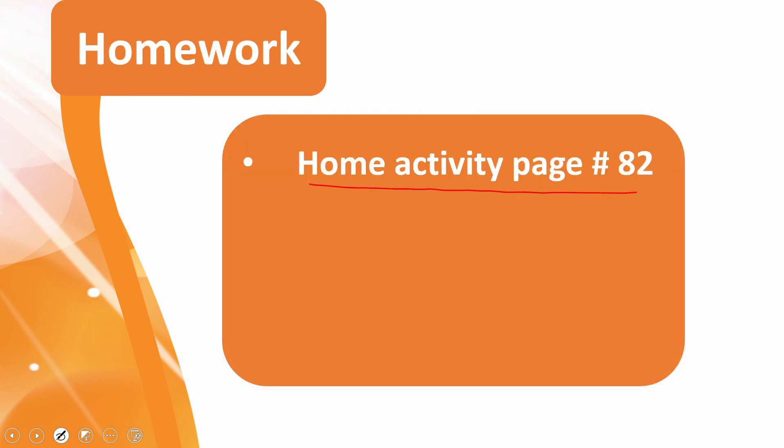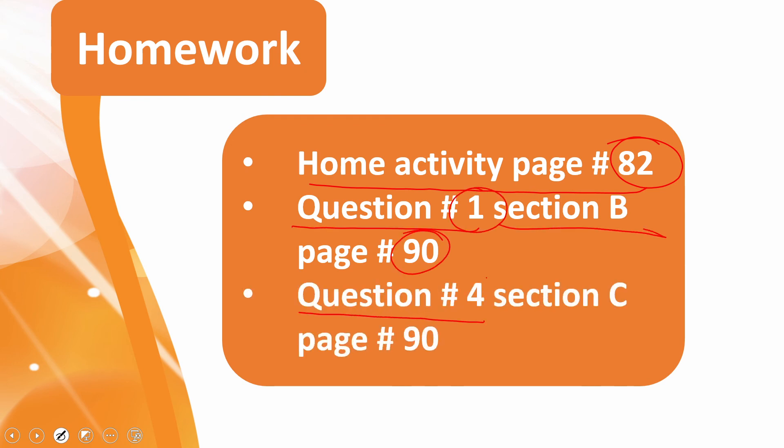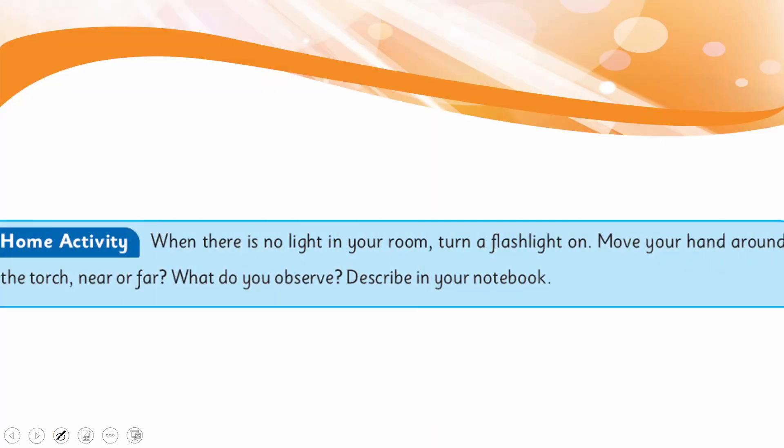For homework, you will do the home activity given on page number 82 and question number one from section B given on page number 90. You will also do question number four from section C given on page number 90. The home activity says: when there is no light in your room, turn a flashlight on, move your hands around the torch near or far. What do you observe? Describe in your notebook. You will observe the shadow and see that the size of the shadow will be changed with the movement of the flashlight.